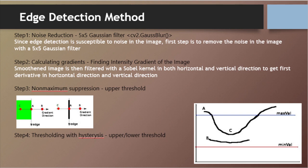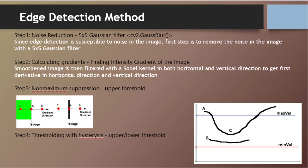Step 4: thresholding with hysteresis. As you can see in the second picture, edge A is above the max value, so it is considered a sure edge. Although edge C is below max value, it is connected to edge A, so it is also considered a valid edge and we get the full curve. But edge B, although it is above min value and is in the same region as edge C, it is not connected to any sure edge, so it is discarded. It is very important that we select min value and max value accordingly to get the correct result.